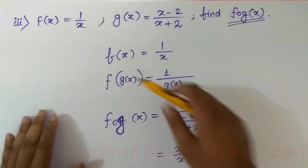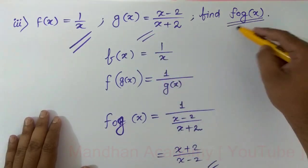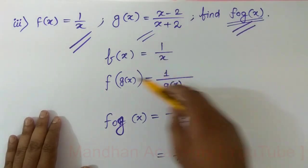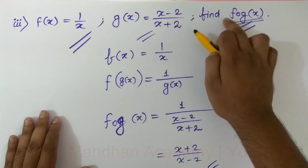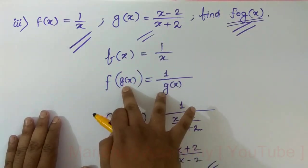Sometimes the question is in this format: f of x will be given to you, g of x will be given to you. You have to find f of g. The first thing is that you have to write the end function. Wherever x is, substitute g of x there.